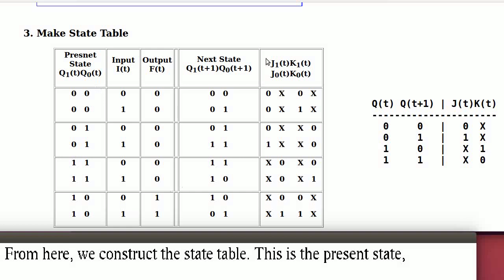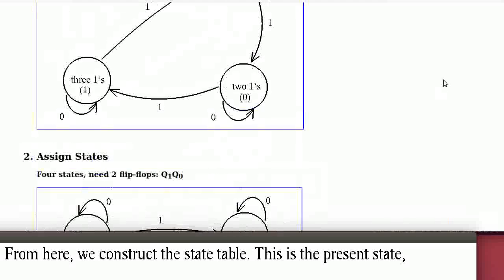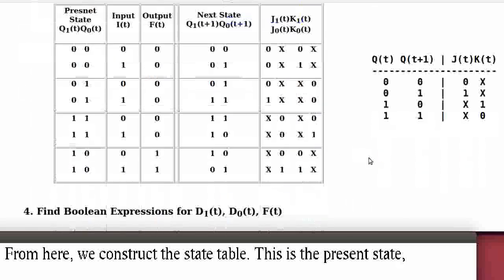We have to answer the question: to bring flip-flop state Q1(t) from 0 to Q1(t+1) = 0, what should J1, K1 be? We use the excitation table derived earlier. For 0 to 0, the entry is J=0, K=don't care. For Q0(t) to Q0(t+1) from 0 to 0, again it is 0, don't care. For 0 to 1, it is 1, don't care. We fill out all entries using this excitation table.